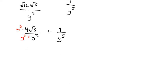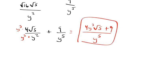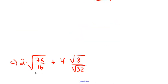Now I have one common denominator of y to the power of 5. The numerator becomes 4 y cubed times the square root of 5, plus 9. In mathematics we always write the number first, then the variable, then the radical. So the final answer is 4y³√5 plus 9, all over y to the fifth.